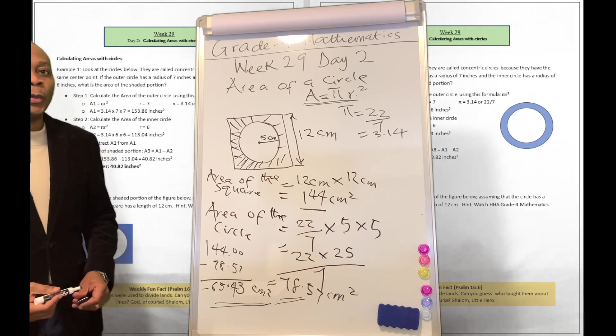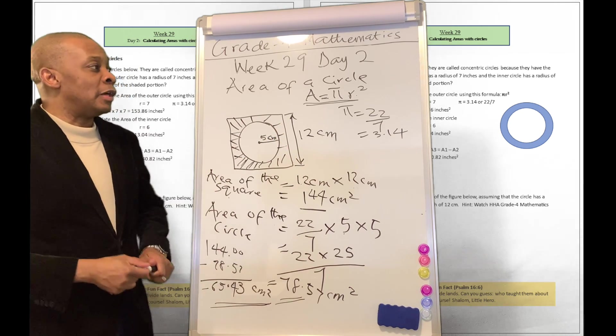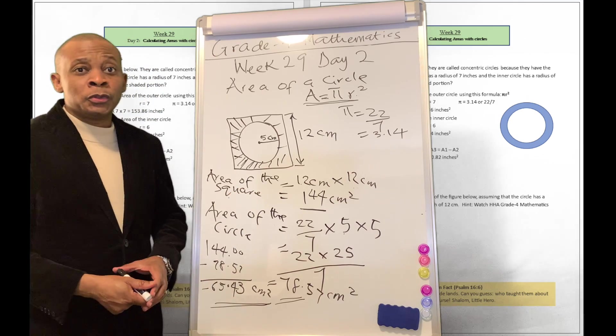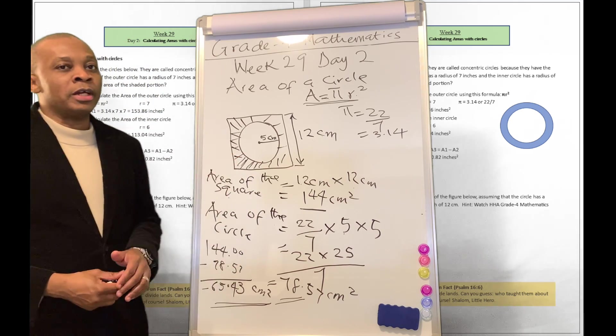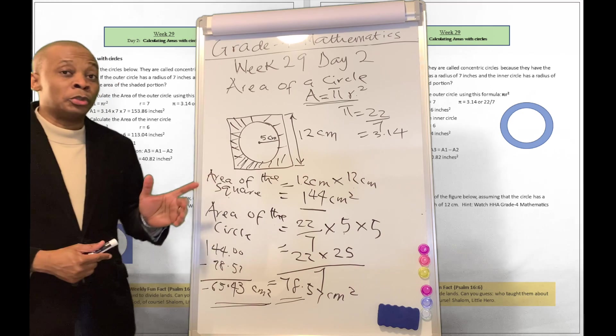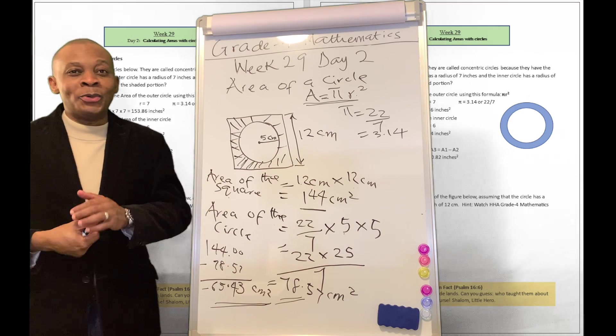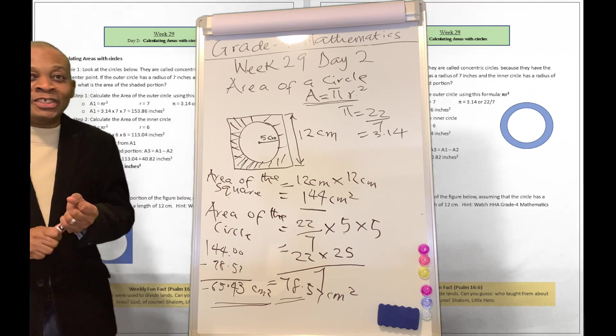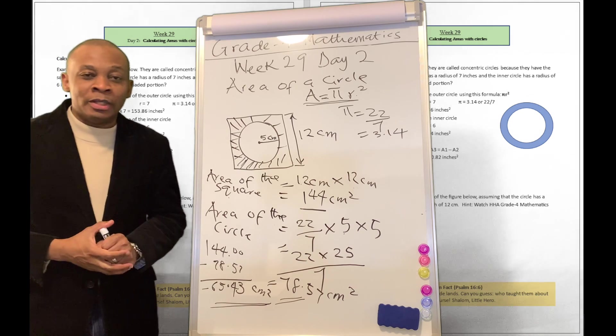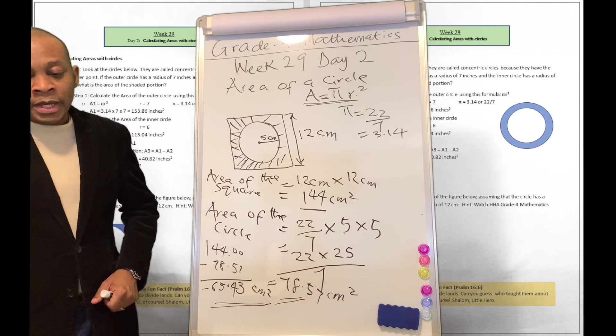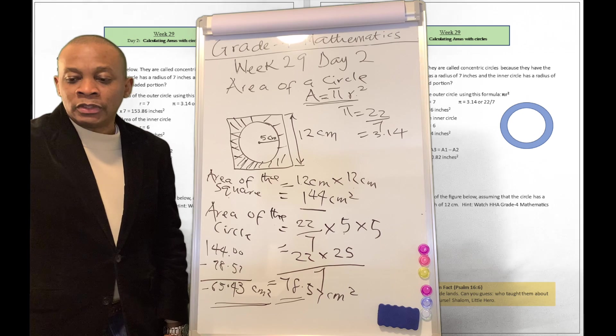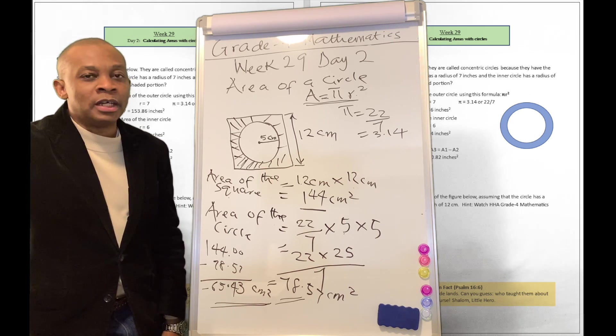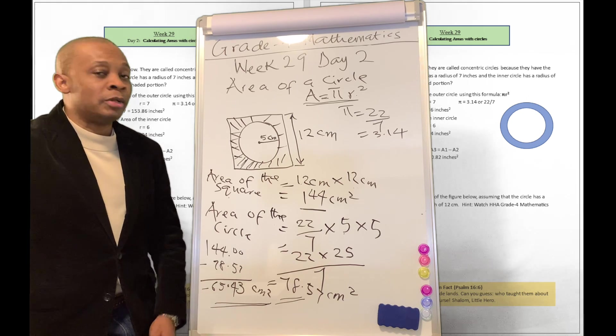All right. So guess what? We leveraged the concept of the area of circles to calculate the area of the shaded portion of that object on the board. Wasn't that fun? Did you enjoy that? Well, I sure hope you did. All right. So go ahead and turn to page number 206. There are other exercises over there and explanations to help you better retain what we talked about today.